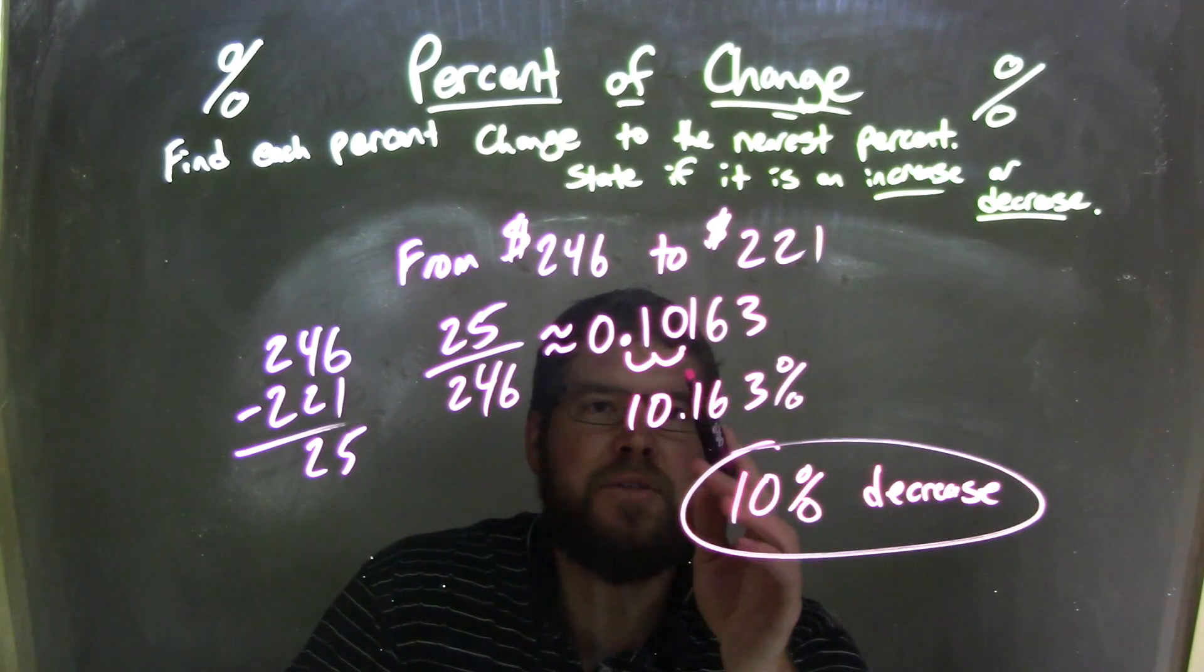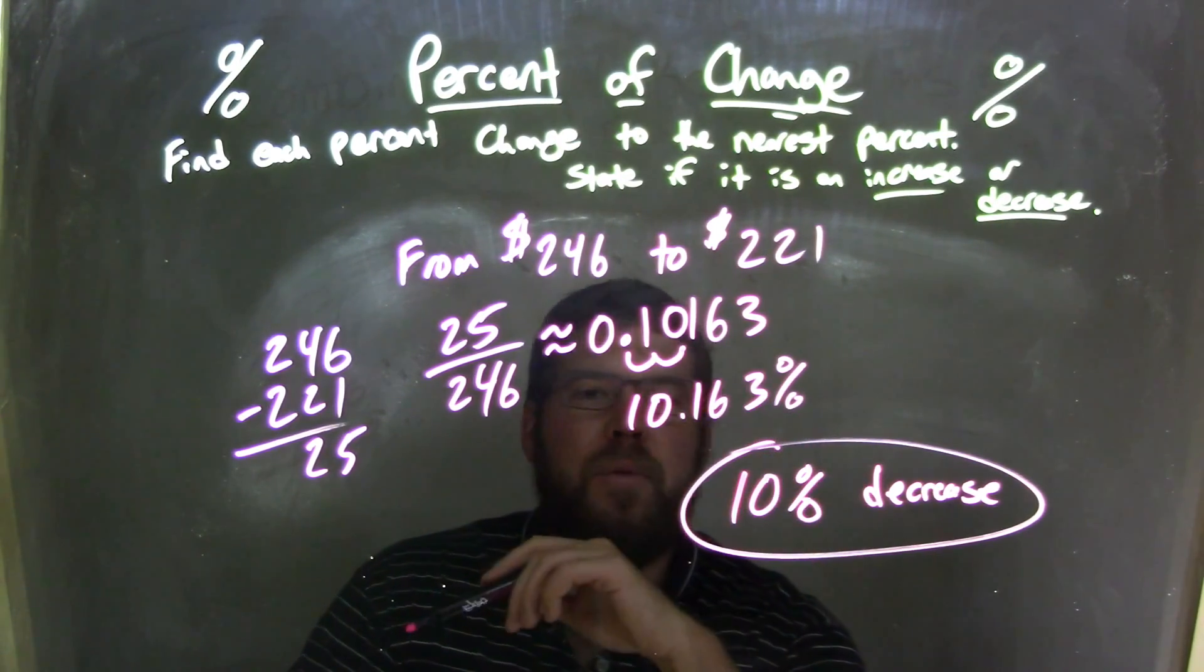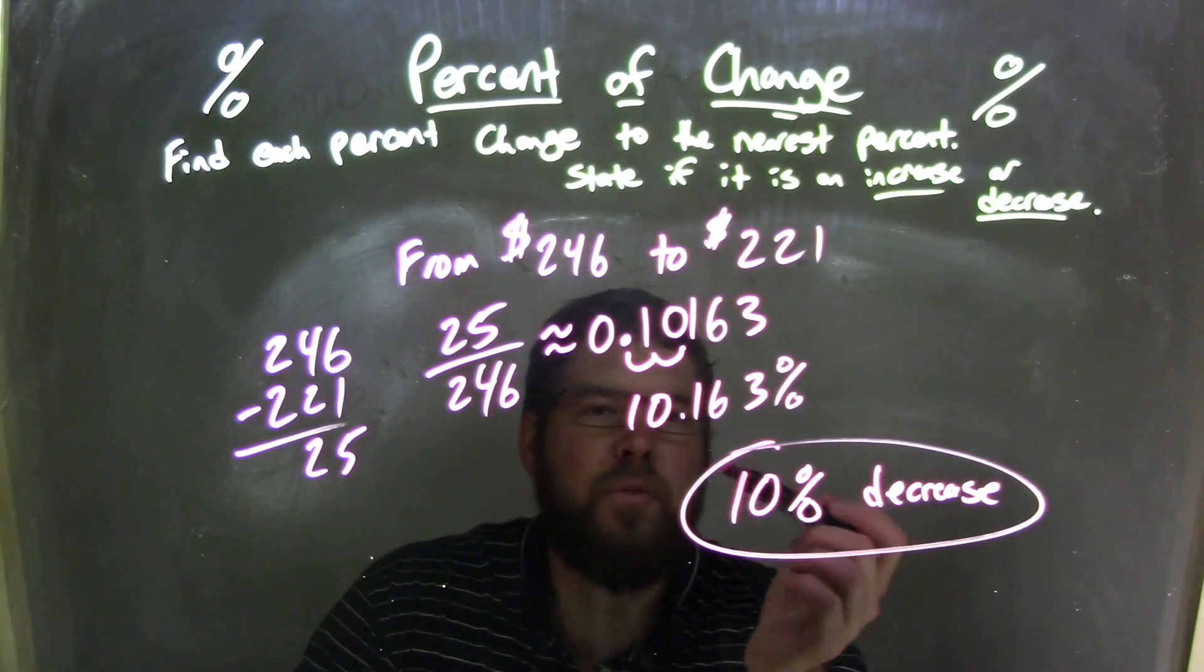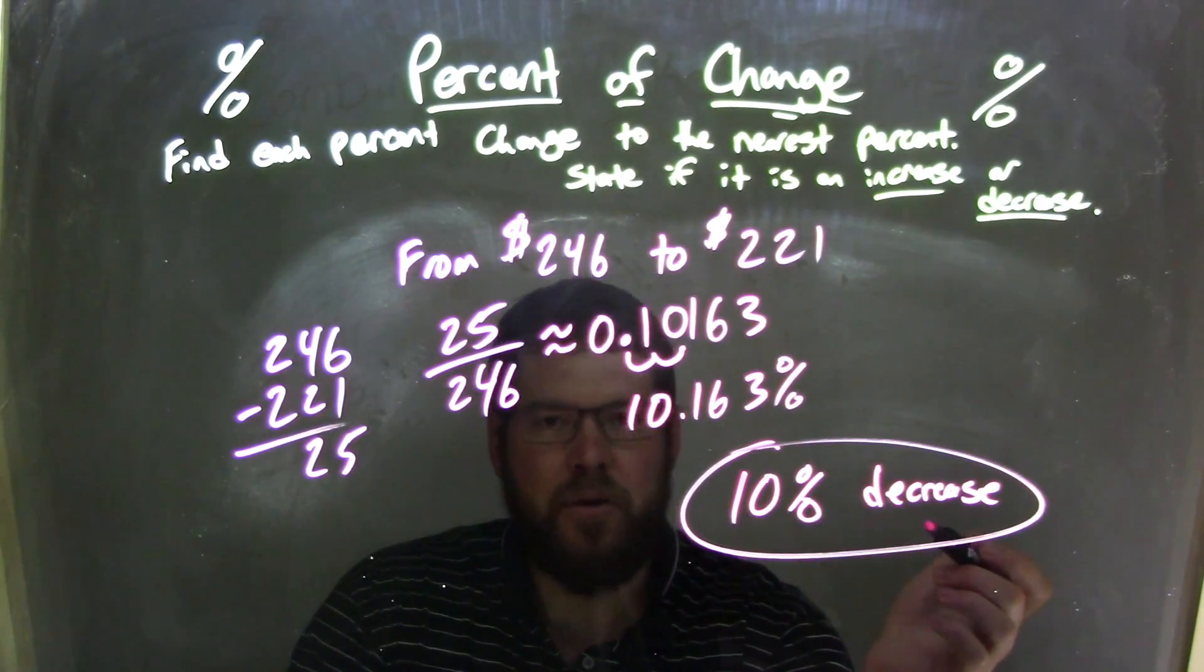we move the decimal over 2 units to convert to a percent. So we get 10.163 percent, but that needed to be rounded to the nearest percent. That 1 causes it to round down, so we're left with a final answer of 10 percent decrease. So let me see you guys. Thank you.